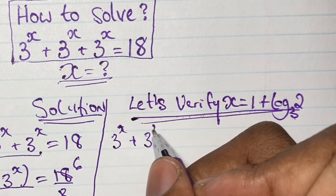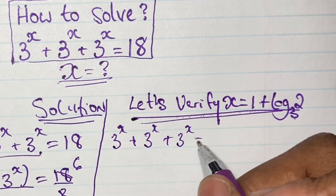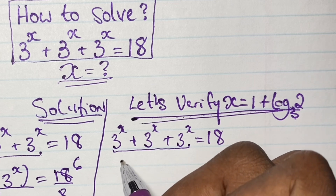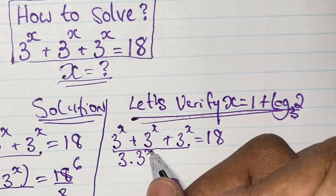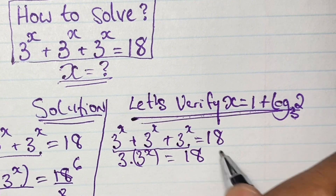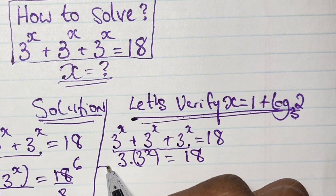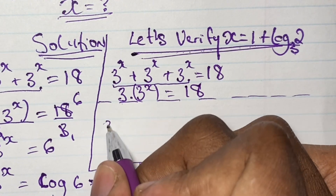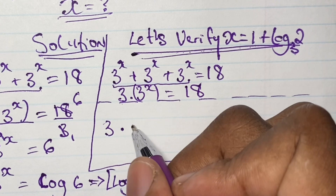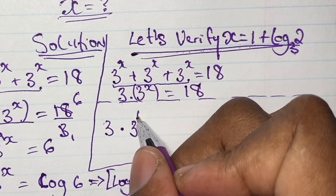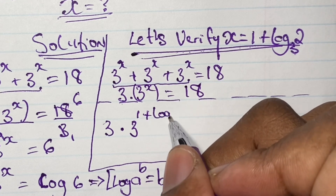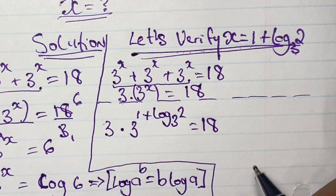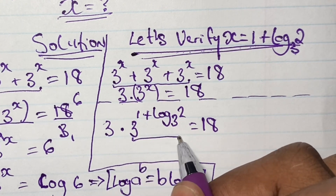Let's go ahead and rewrite our problem: 3 to the power of x plus 3 to the power of x plus 3 to the power of x equals 18, which we simplify as 3 times 3 to the power of x equals 18. Now let's verify our solution by substituting x is equal to 1 plus log base 3 of 2 into this equation. Now we can look at some index laws.